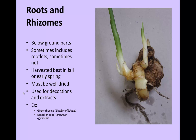Roots and rhizomes are the below ground parts. Rhizomes tend to crawl along the ground; some of the most common are ginger, turmeric, and calamus. Roots head more deeply directly into the ground, and sometimes you include the rootlets and sometimes you don't. Roots are harvested best in the late fall or early spring, and they must be well dried to prevent molding. They're used typically for decoctions or extracts, because the woody parts wouldn't work well as an infusion. Some examples are ginger rhizome and dandelion roots.